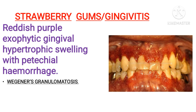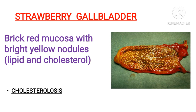Next is strawberry gums or gingivitis. It is most commonly seen in Wegener's granulomatosis, also known as granulomatosis with polyangiitis. It is an autoimmune condition more commonly affecting males, seen above the age of 40 years. Here the gingiva undergoes hypertrophy — an increase in cell size — leading to exophytic gingival swelling accompanied by hemorrhage, giving a reddish color that resembles a strawberry. Therefore, strawberry gums is a reddish-purple exophytic gingival swelling with petechial hemorrhage.